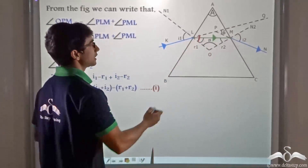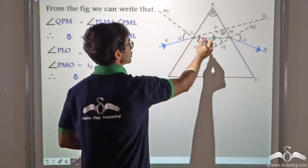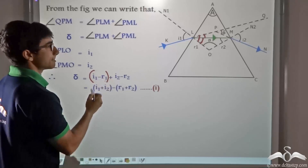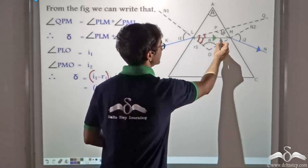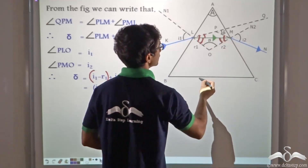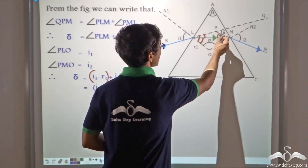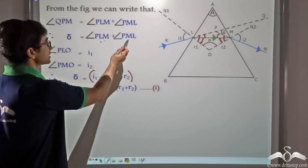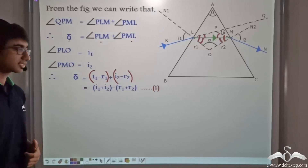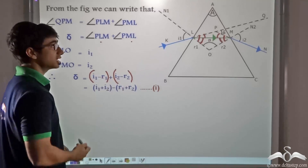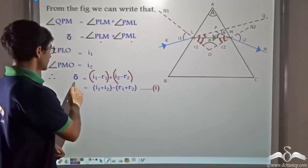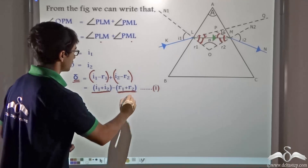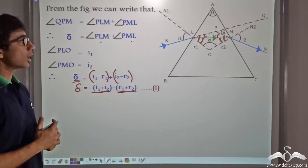Since the entire angle is I1 and the inner angle is R1, we can write angle PLM as I1 minus R1. Since the inner angle is R2 and the entire angle is I2, we can write angle PMO as I2 minus R2. We already established that PLM plus PML equals delta. Thus: delta = (I1 − R1) + (I2 − R2), which rearranges to: delta = (I1 + I2) − (R1 + R2).